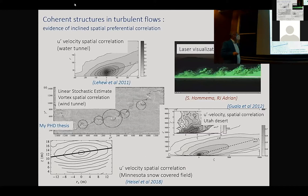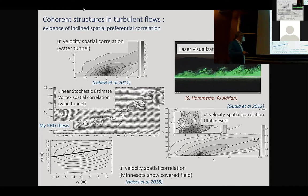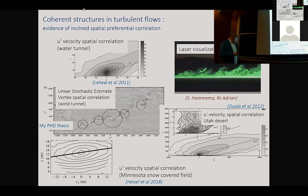When we look at coherent structures in turbulent flow, we observe a similar ramp-like pattern. I'm looking at the velocity spatial correlation in a water tunnel: taking a velocity fluctuation and examining along which direction it is most correlated to itself. In Utah, in the atmospheric boundary layer, laser visualization by Hommema and Adrian shows vortex correlation — an inclination of the velocity aligned along a preferential direction between 8 and 15 degrees, also characterized by an alignment of vertical structures.